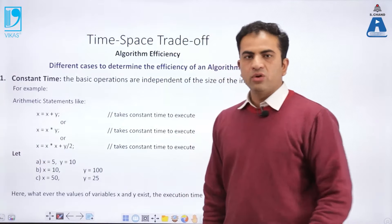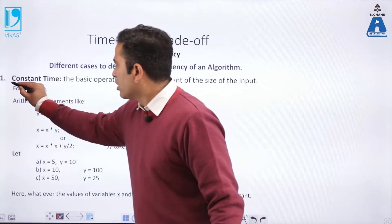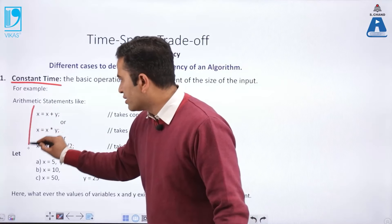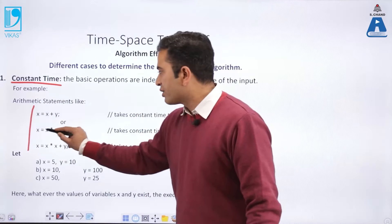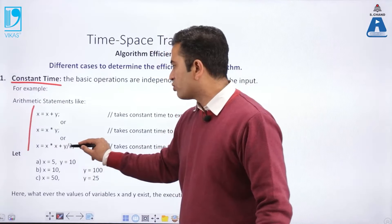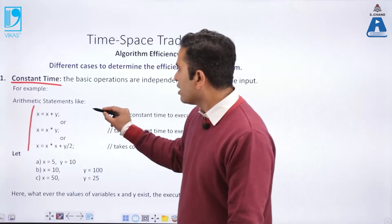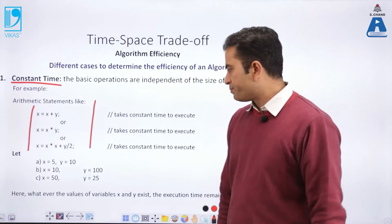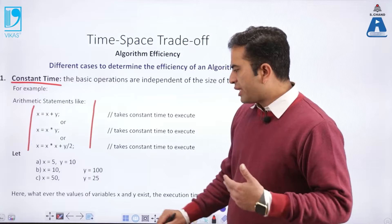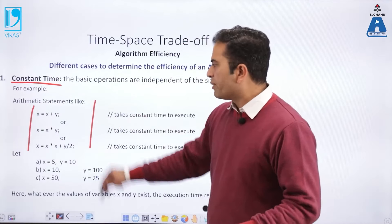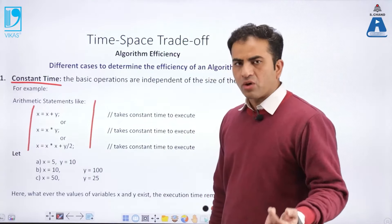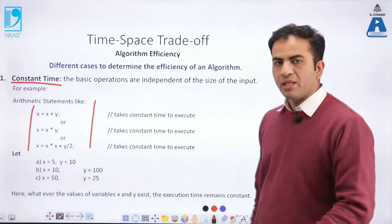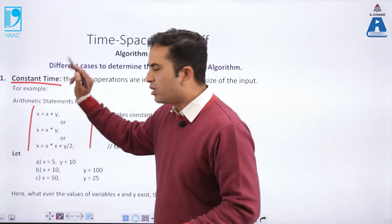Now, how do we calculate algorithm efficiency? First is constant time. Arithmetic statements like x = x + y, x = x * y, or x = (x * x + y) / 2 are various arithmetic expressions that take constant time. When we execute simple statements or arithmetic expressions, whatever the values of variables x and y, the execution time remains constant — that is why it is called constant time.